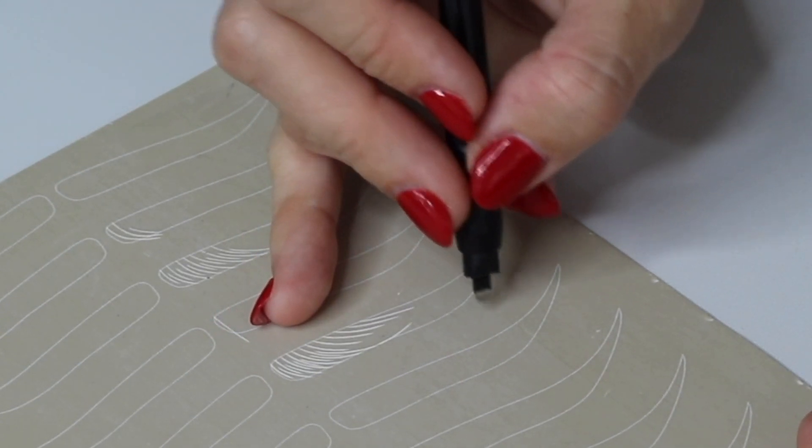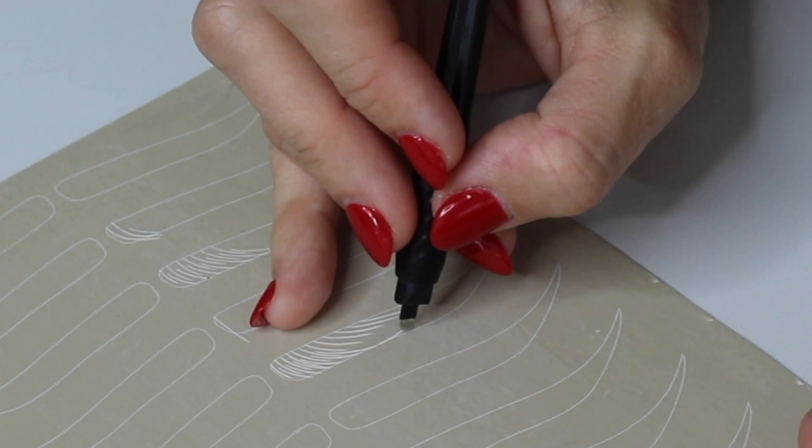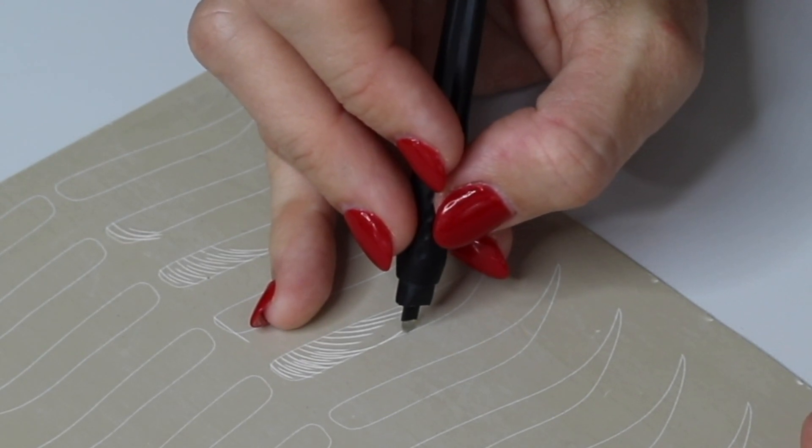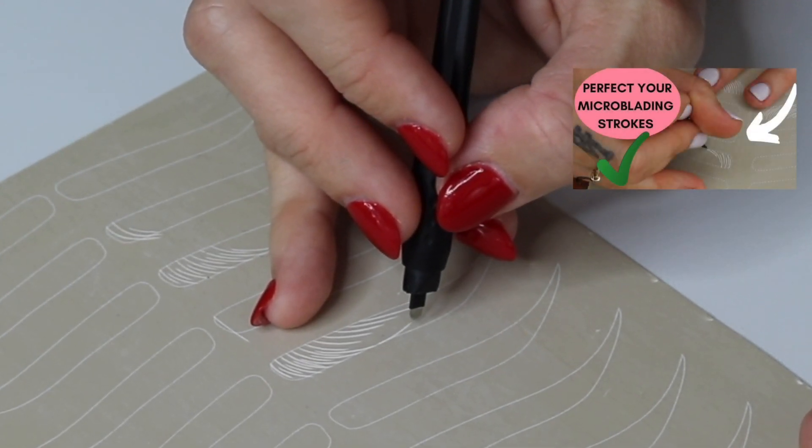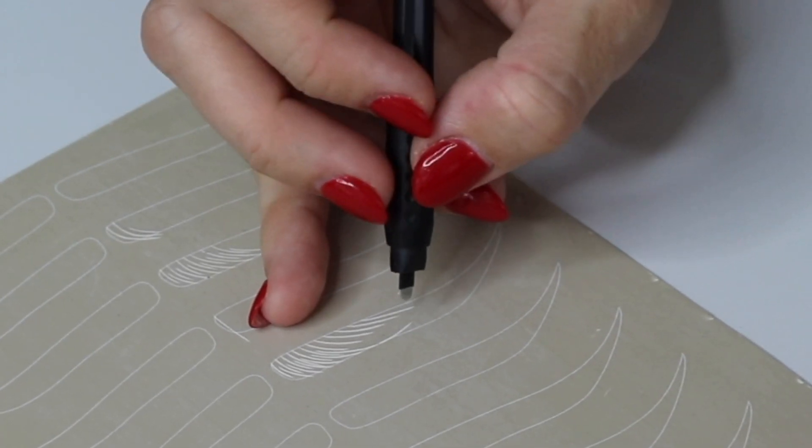However the closer I get to the upper arch the less my blade is going to be hugging that line. I have more videos on this explaining what it means to hug the line so you can check that out if you want to.